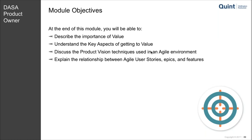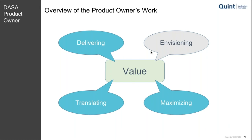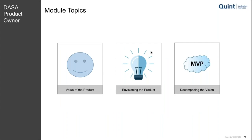The module objectives for this module — module three — are about value: describing the importance of value, some key aspects, product vision techniques used in agile environments, and the relationship between user stories, epics, and features. For the next modules we created four around value: envisioning, then maximizing, translating, and delivering, just to create some structure around value, which is one of the most important subjects for a product owner.